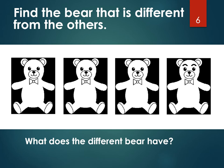Here's your next question. Again, I want you to find the bear that's different. Look very, very carefully. Which one is it? Did you find it? If you pointed to this one, you are correct. What's different about this bear? This bear has eyebrows. The other bears don't have eyebrows, but this bear has some big black eyebrows. Isn't that funny? Let's go to the next question.